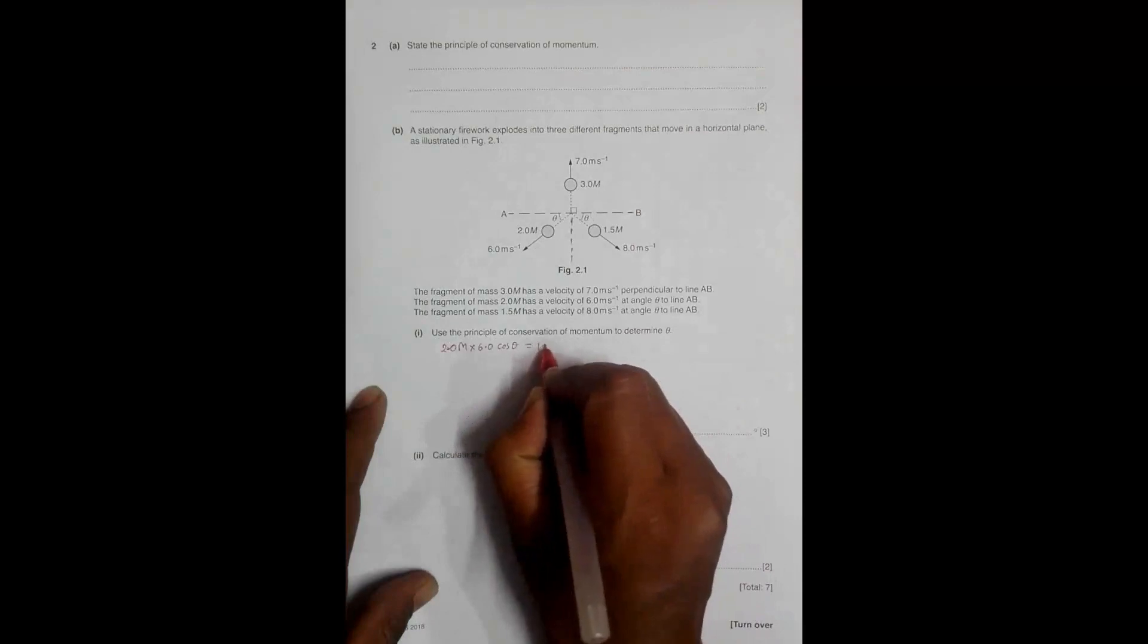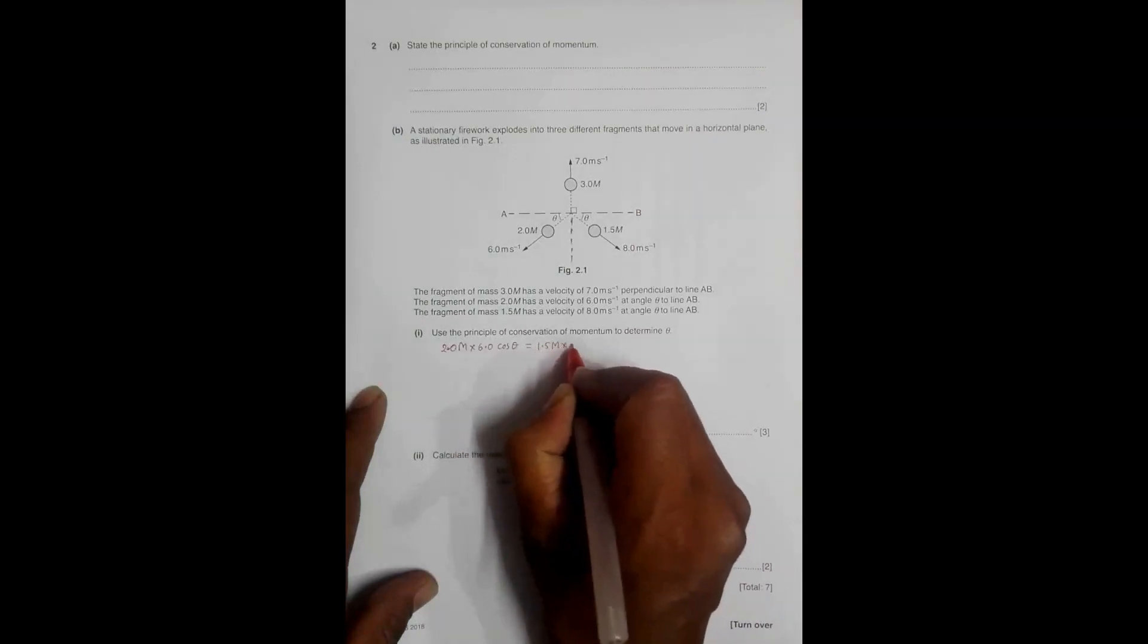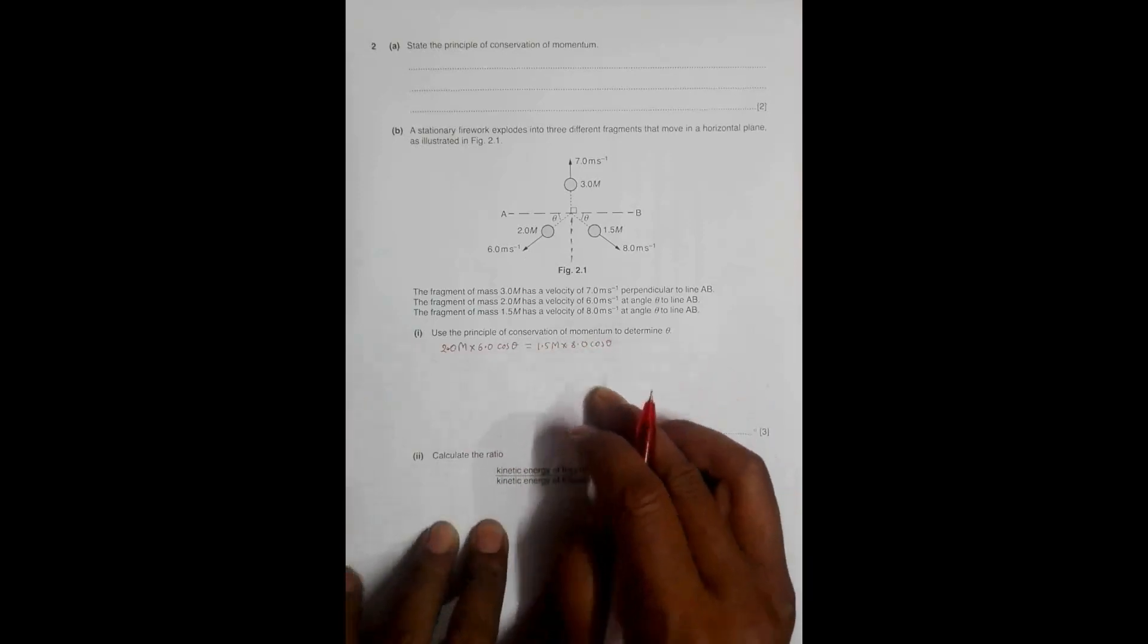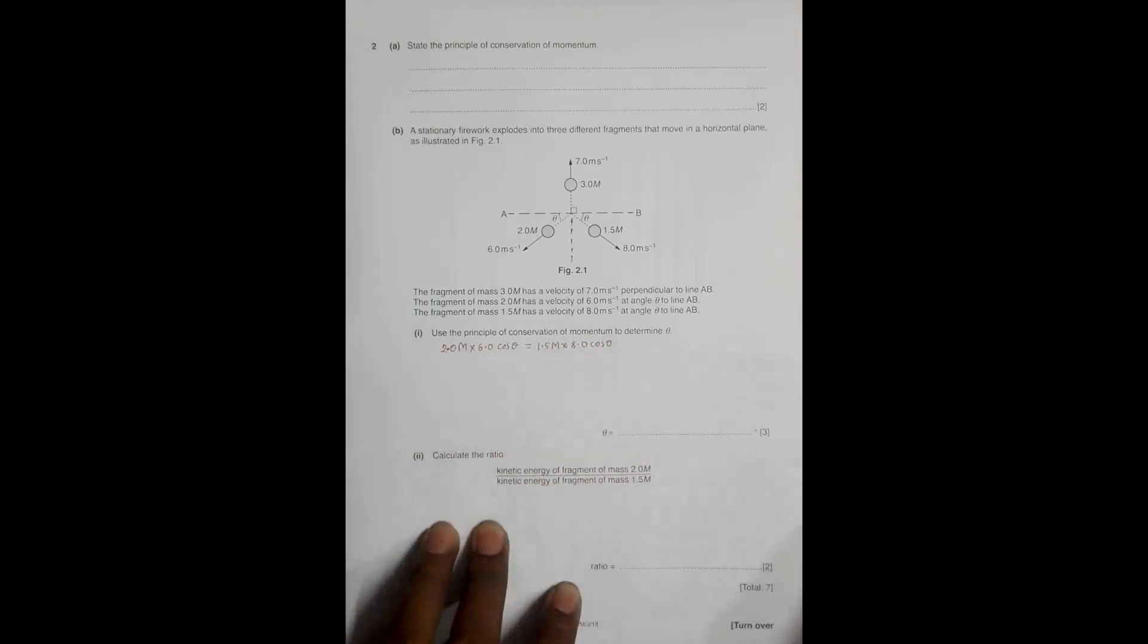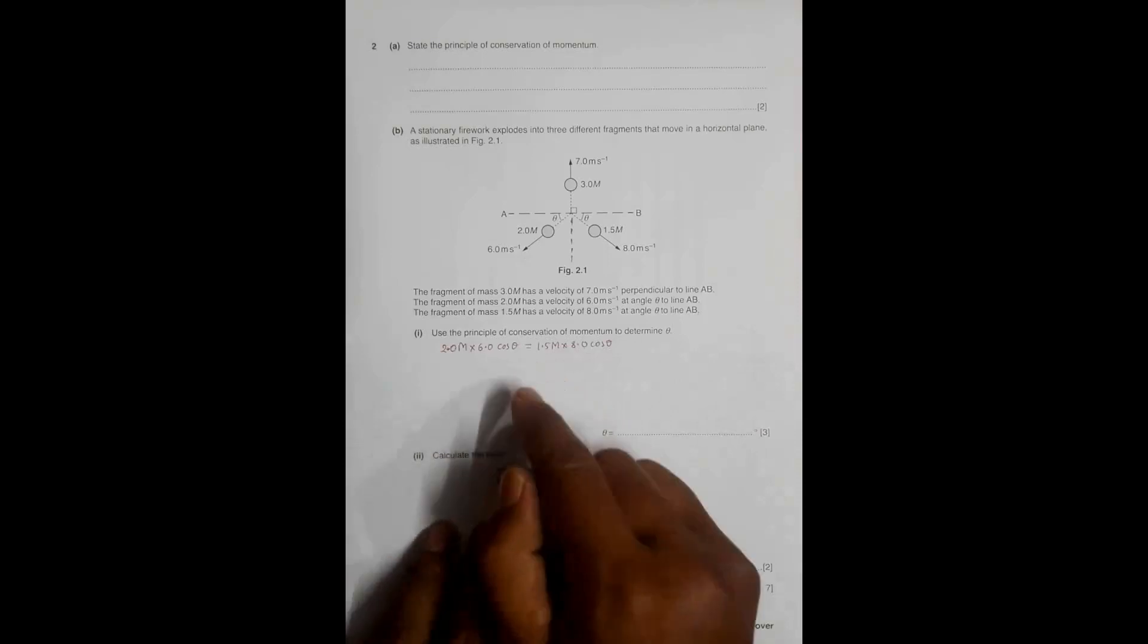Since it is reverse, it's actually this minus this equal to zero, but I have switched this side to the other side. The 3.0m fragment does not have any component in the horizontal direction, so it doesn't come into picture.